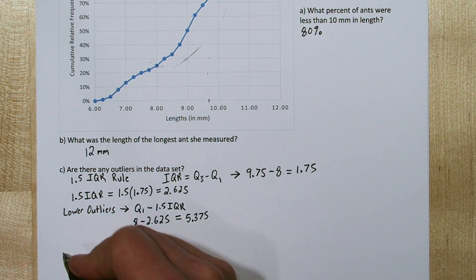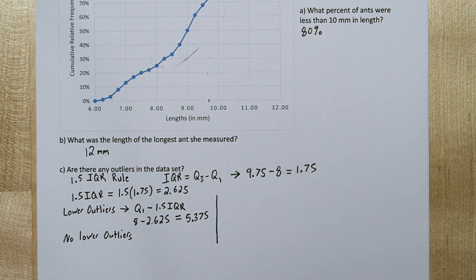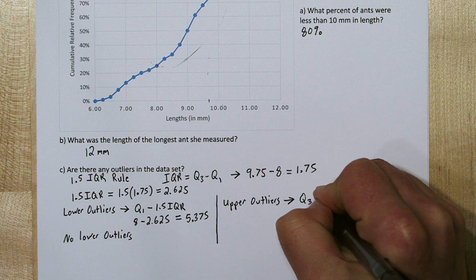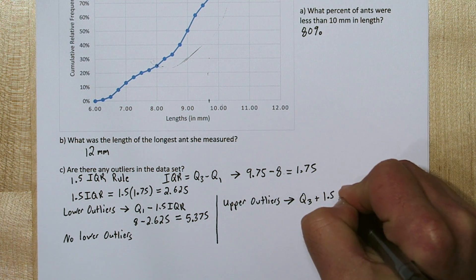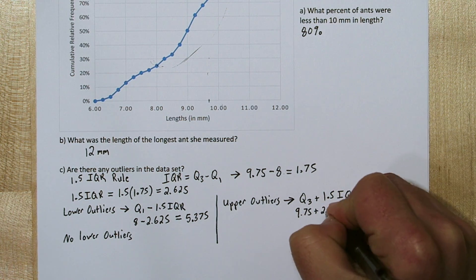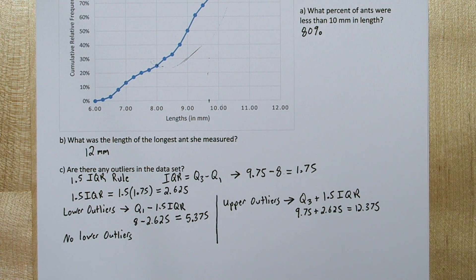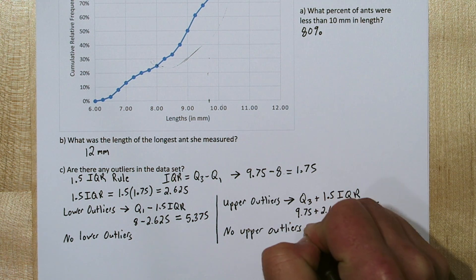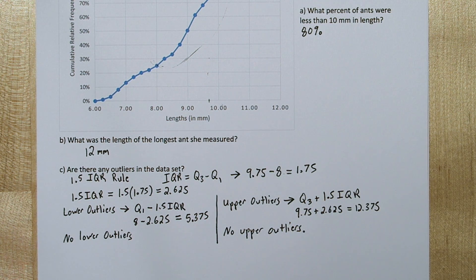Now let's check for upper outliers. To be an upper outlier, you have to be at least 1.5 IQRs above quartile 3. So we'll take quartile 3 and add 1.5 IQRs, and we get 12.375. Now in part B, we said the longest ant she measured was 12 millimeters. So we have no upper outliers either.